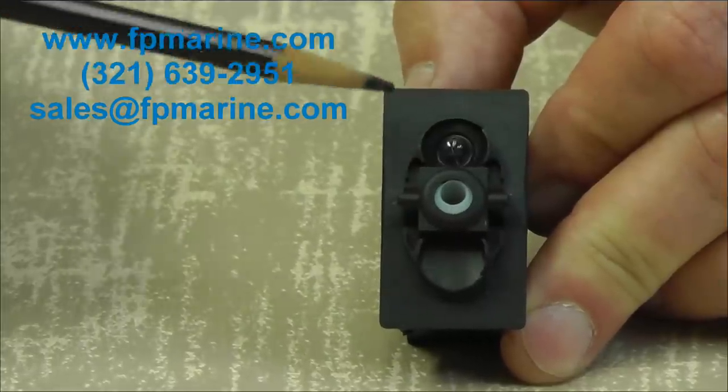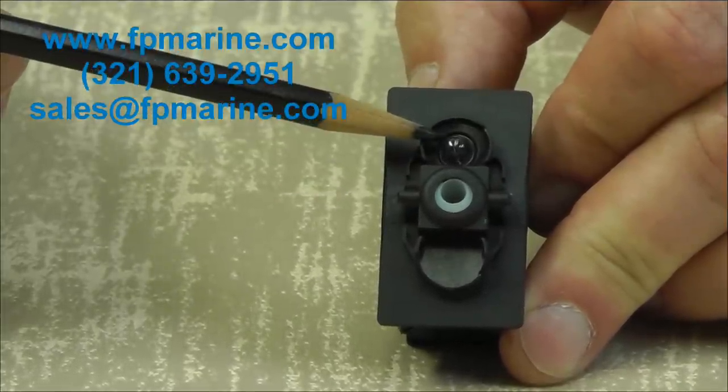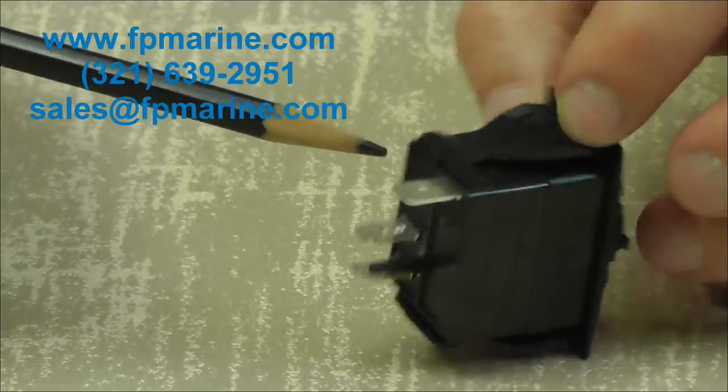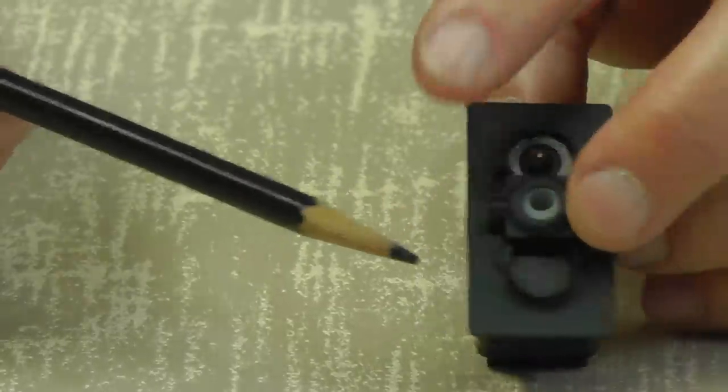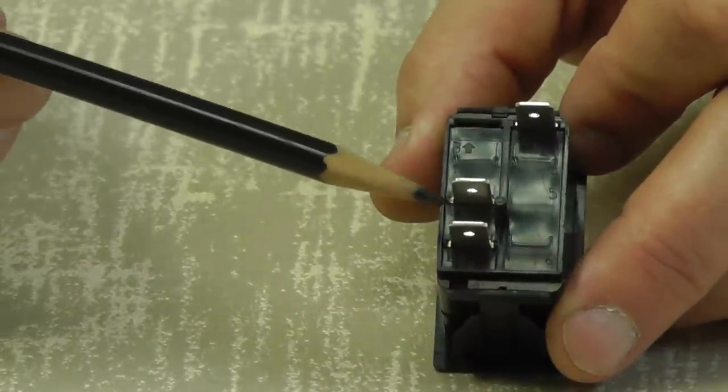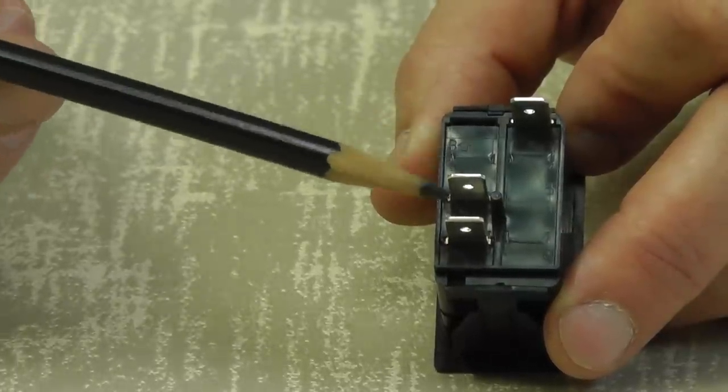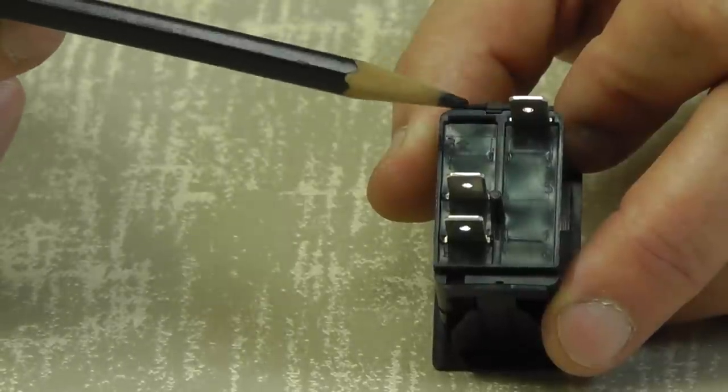Carling rocker switches have two possible bulb locations. Number 1, which we'll call the top, is going to be above terminals number 1 and 4. Bulb location number 2, which we'll call the bottom, is going to be above terminal locations number 3 and 6. Remember, 1, 2, 3, 4, 5, 6, 7, 8.